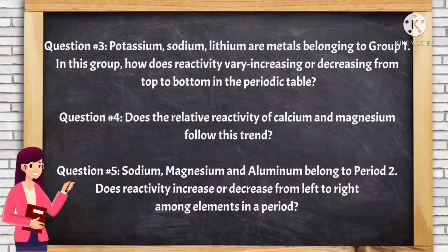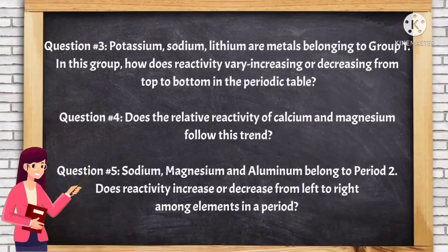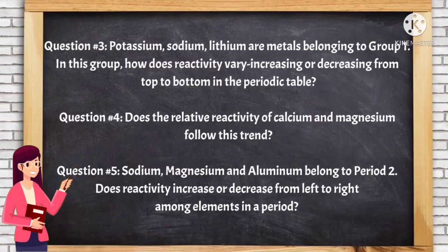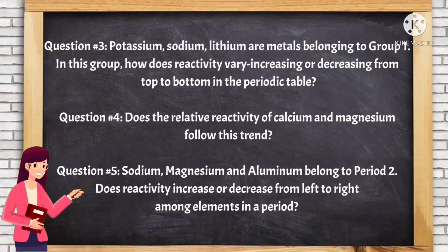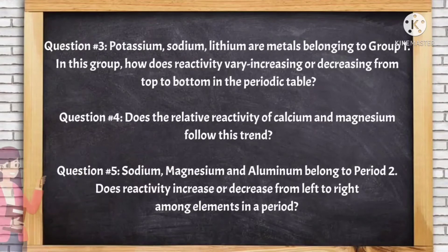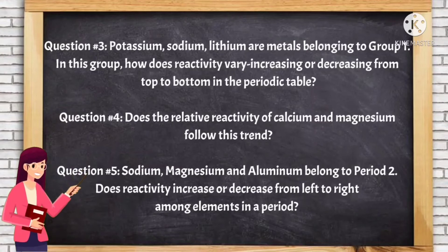Question number three, potassium, sodium, lithium are metals belonging to group one. In this group, how does reactivity vary, increasing or decreasing from top to bottom in the periodic table? Question number four, does the relative reactivity of calcium and magnesium follow this trend?